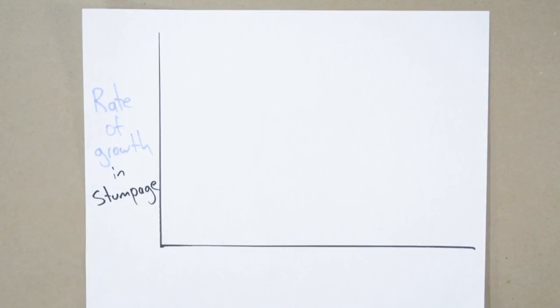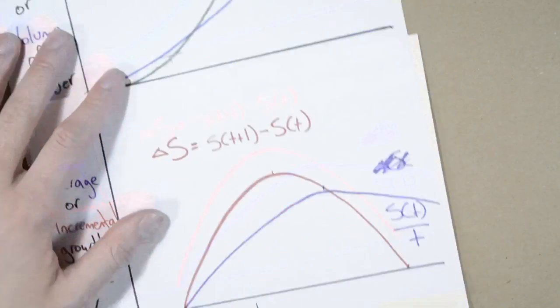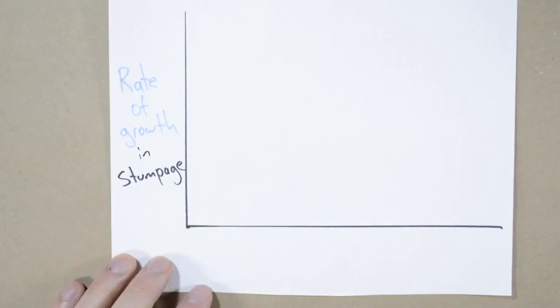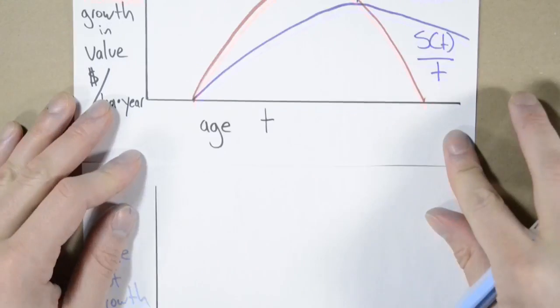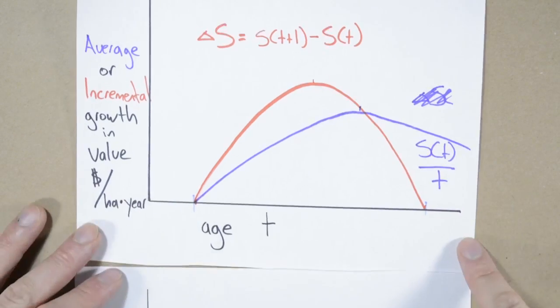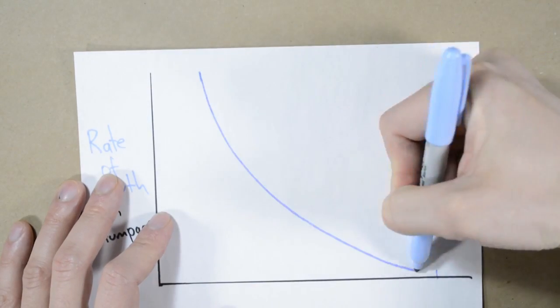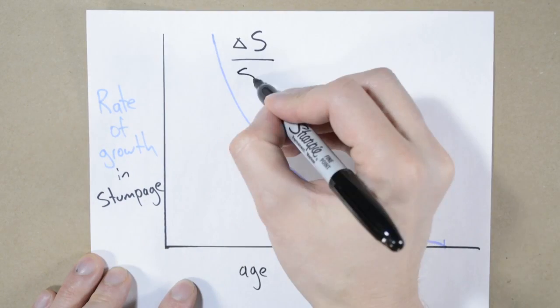What we looked at in the previous video, we're dividing the new stumpage value by the total stumpage value to determine by what percent the forest is going to grow this year. It's not going to start until the stumpage value starts increasing and it will be zero once the growth stops. Just eyeballing it this time. It will look something like this.